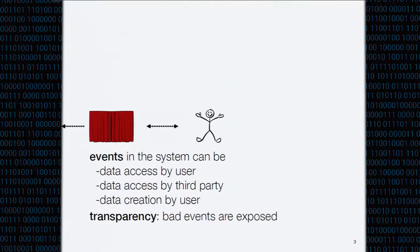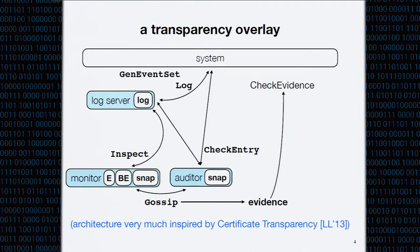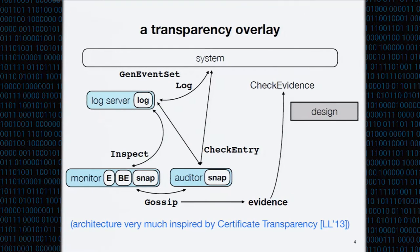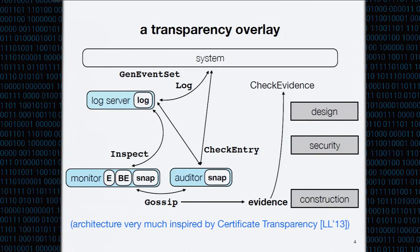The main tool we introduce is a primitive we call a transparency overlay. Anyone familiar with Certificate Transparency (CT) from Google will notice it looks a lot like it - our work was really inspired by the design of CT and is trying to abstract away the properties they provide and give a formal treatment. The rest of the talk will cover the system design, the formal security properties, our abstract construction of a transparency overlay, and the different systems we can apply this overlay to.